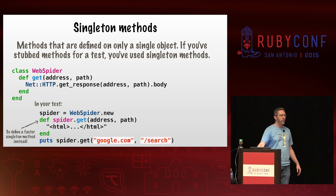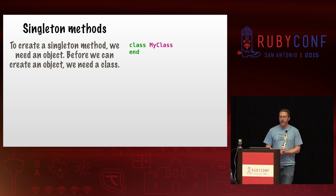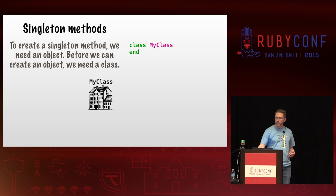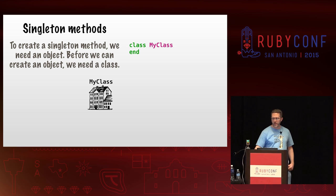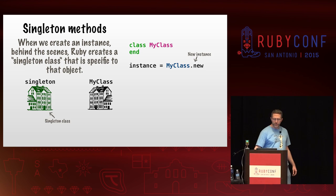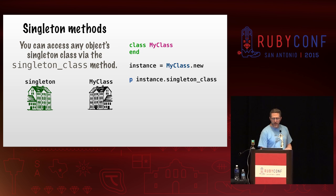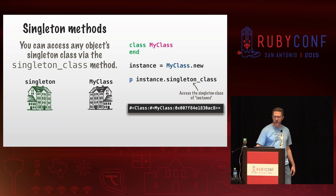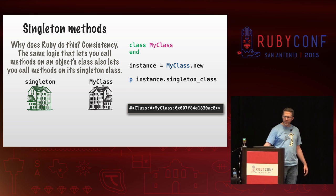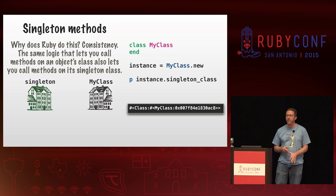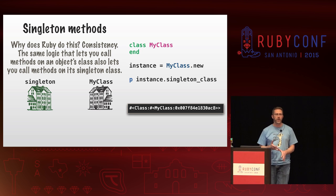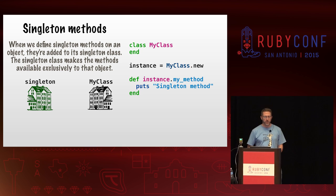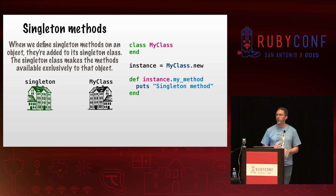Now let's take a look at how method lookup works with those. To create a singleton method, we need an object, and before we can create an object, we're going to need a class. When we create an instance of my class, behind the scenes Ruby will create a singleton class specific to that object. You can access any object's singleton class via the singleton class method. When we define singleton methods on an object, they're added to its singleton class, and that class makes the methods available exclusively to that object.